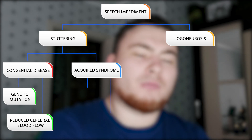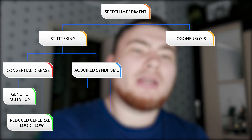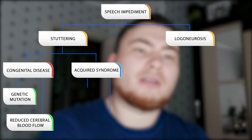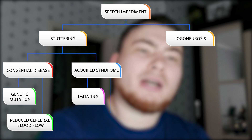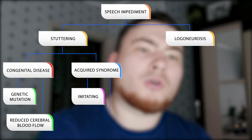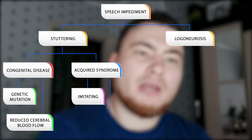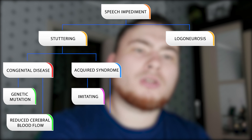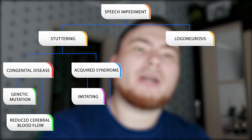Acquired stuttering can be caused by a person being teased or copying another stuttering person. If you try to repeat certain syllables on purpose, your body memorizes the repetition of syllables, which causes the person to stutter for the rest of their life. This kind of stuttering is completely curable.